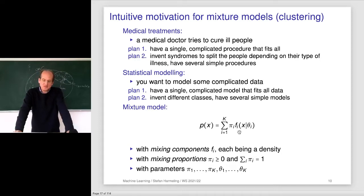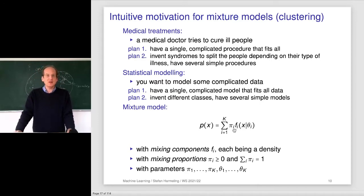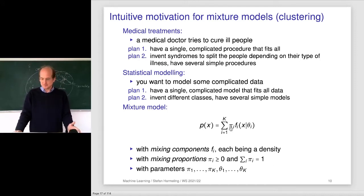The mixture model has components f_i — think of them as Gaussian distributions — with different parameters theta_i (different means and covariance matrices) for each of the k components. Each component is a PDF integrating to one. To combine them, we take a convex combination with weights pi_i, which must be greater than zero and sum to one. In 1D: one Gaussian with mean mu1 and sigma1, another with mean mu2 and sigma2. Summing them with equal weights pi1=1/2, pi2=1/2 gives a bimodal curve. Changing the weights — say 4/5 and 1/5 — the first bump goes up and the second goes down, producing a mixture distribution with a much more complicated shape than a single Gaussian.